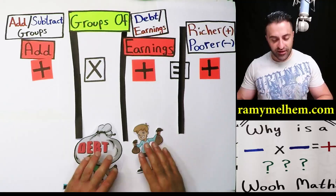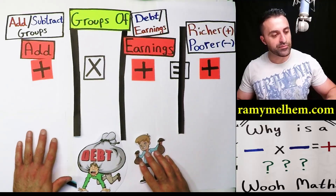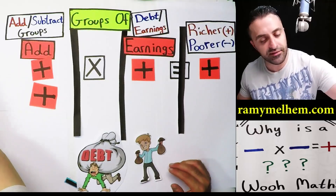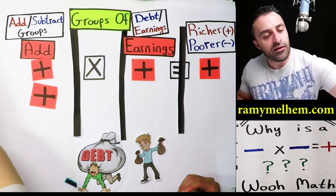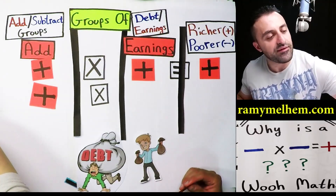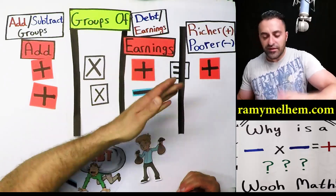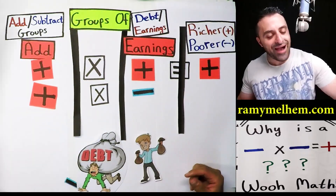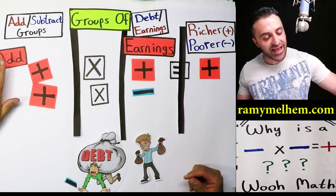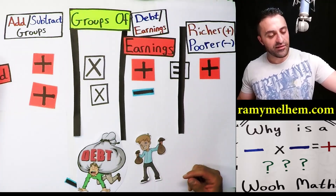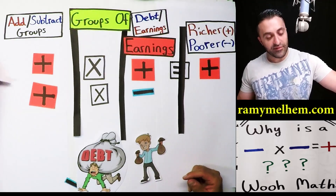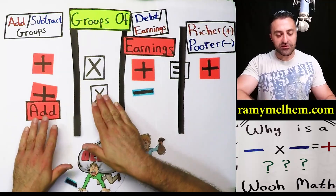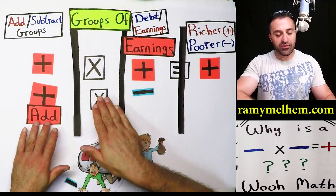Richer. Positive. Let's move on to the next example: a positive multiplied by a negative. We're going to flip that sign. Now, what is this telling us — is it telling us add or subtract? If the first number is positive, it's adding.